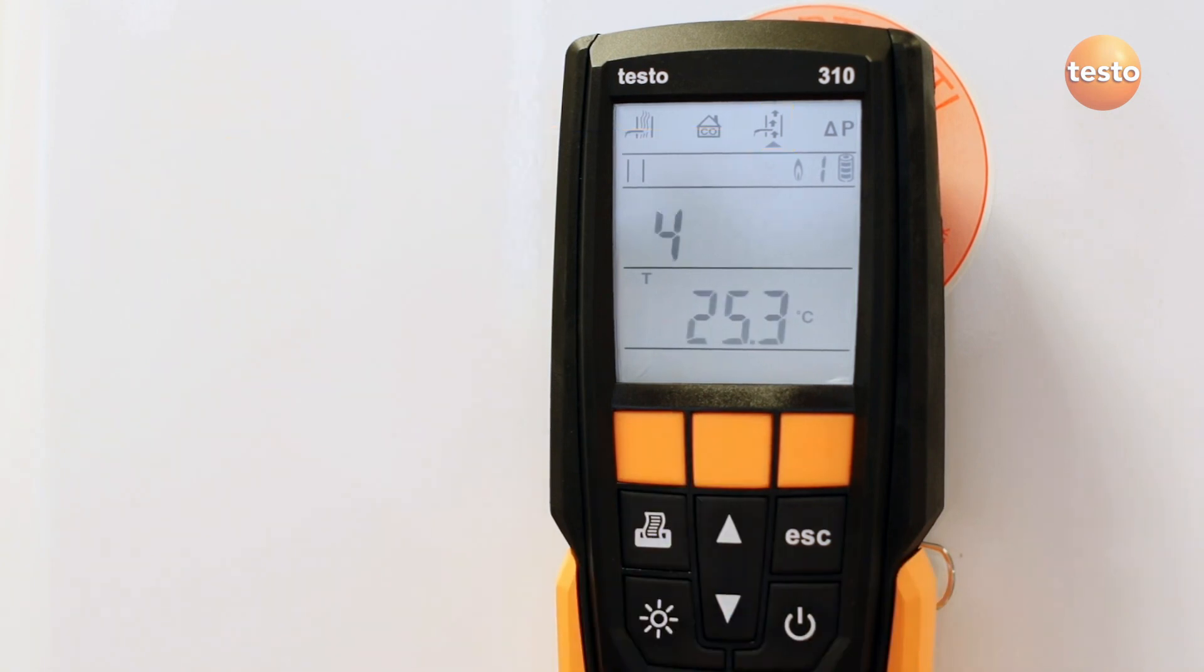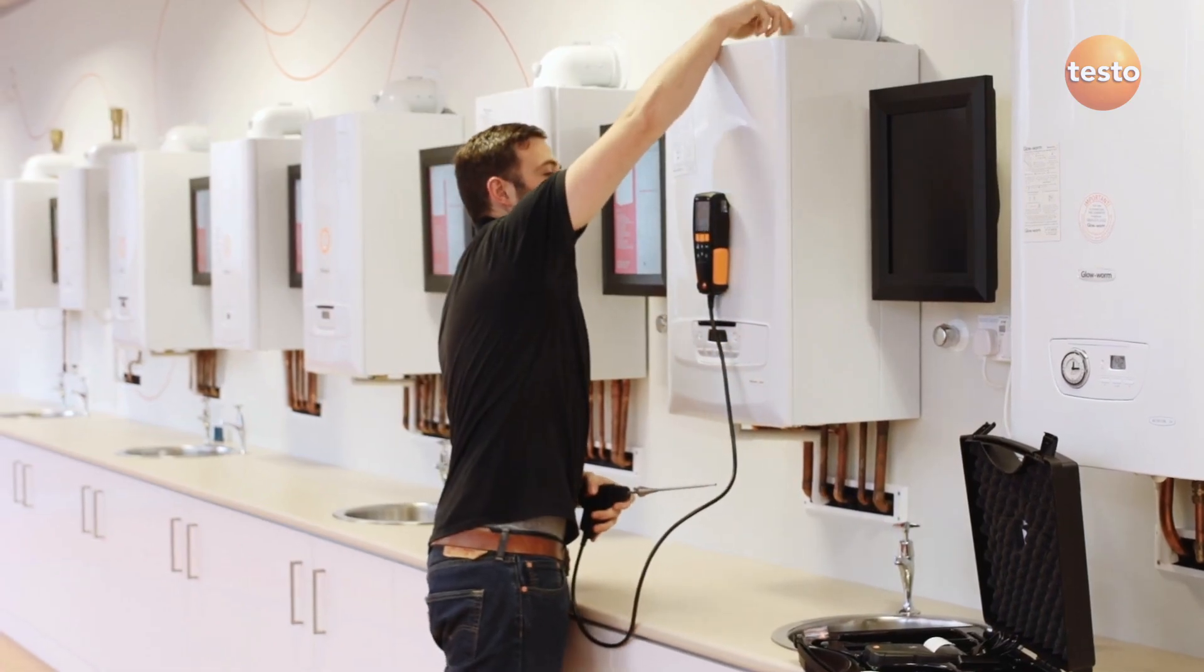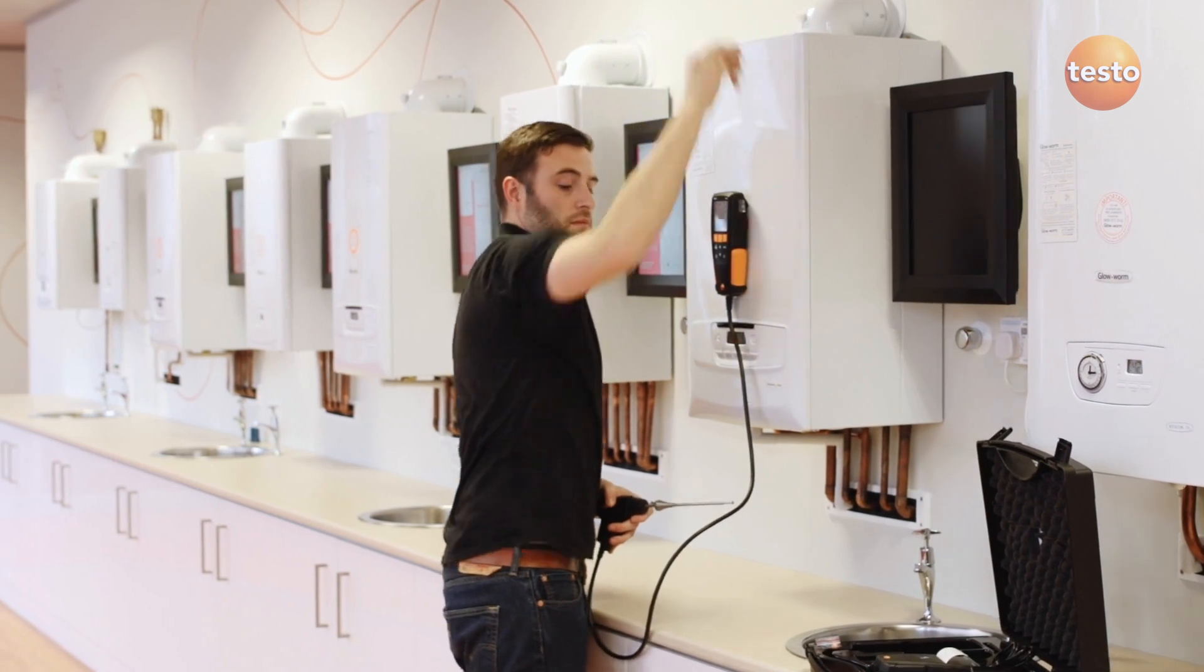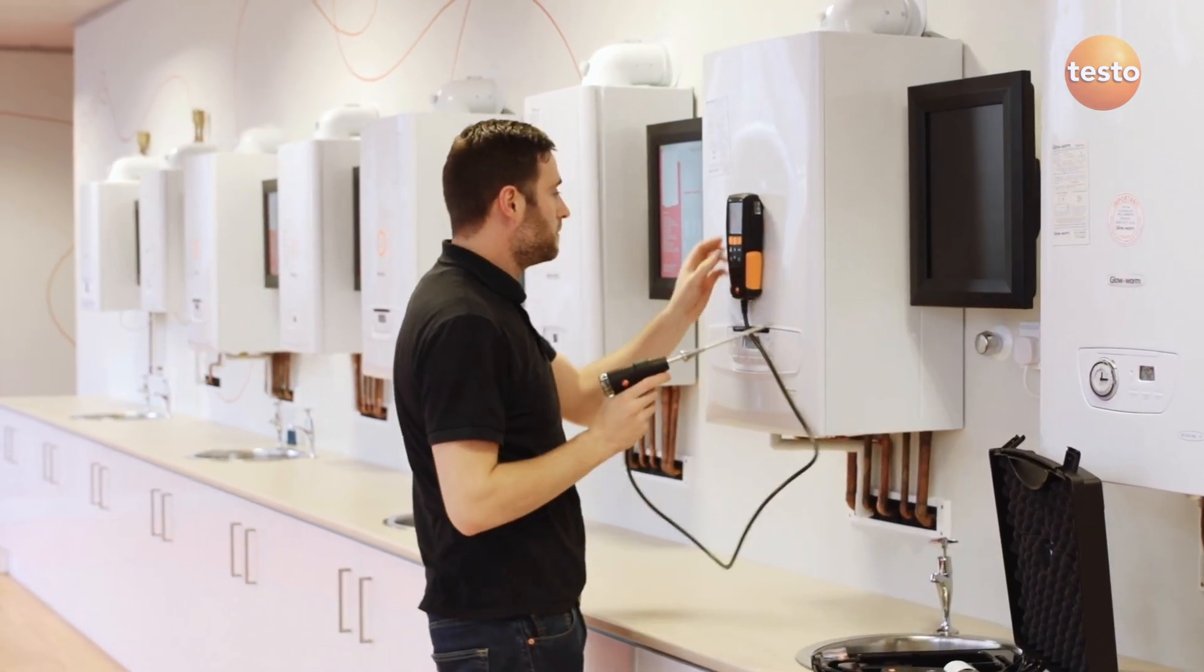Press start. The pressure sensors adjust to the barometric pressure for five seconds. It's important that the probe is in fresh air while the pressure sensors are zeroed. Then it's ready for the probe to be put in the flue with the boiler running.